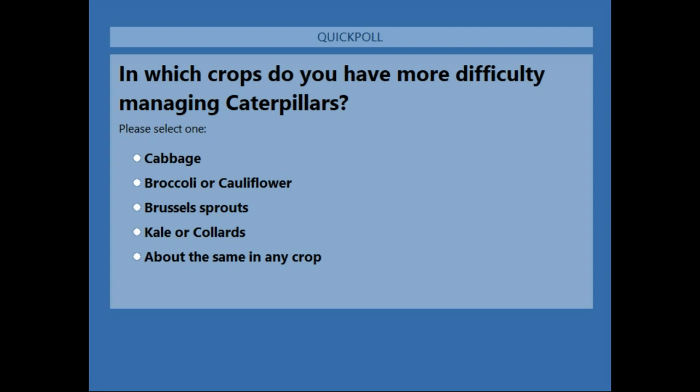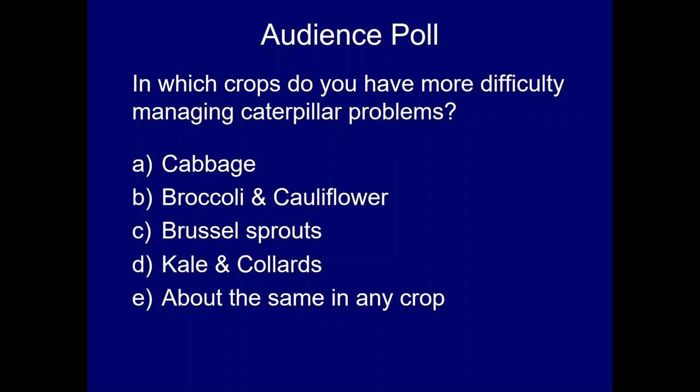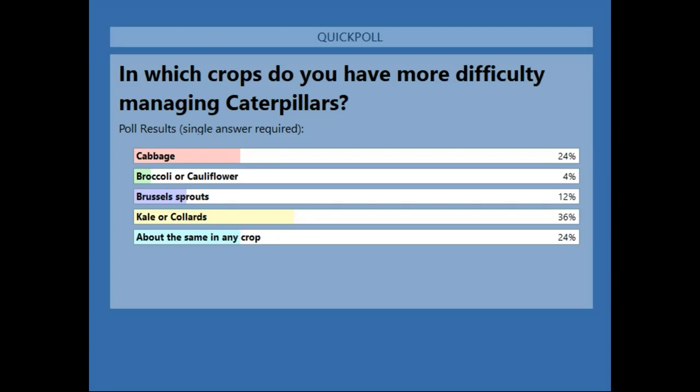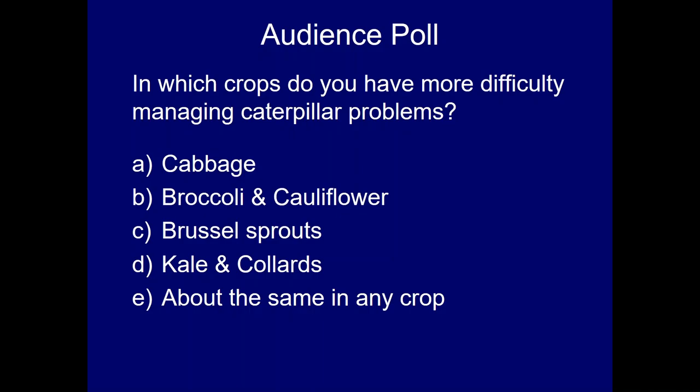About half the people have voted so far. The results show that about a quarter of people said cabbage, kale, and collards were problematic, and many folks also said about the same in any crop. Thank you very much for your responses — this will be helpful for us to consider for future research efforts and information delivery.